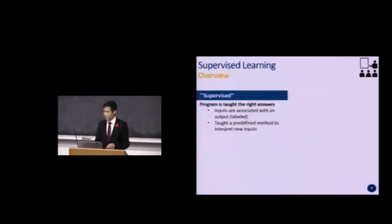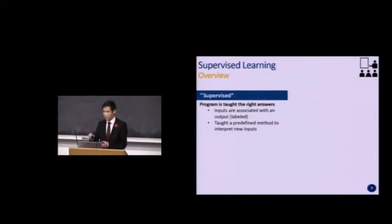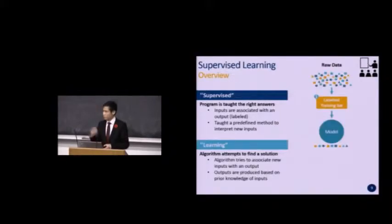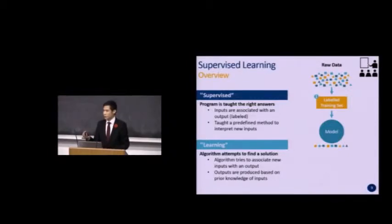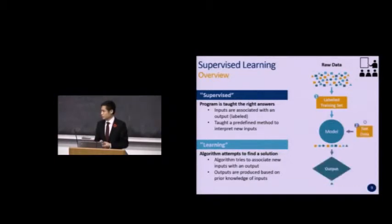In supervised learning, you are actually telling the program what the right answers are. You tell it that the data is associated with a color and shape label, creating a labeled training set to teach the program to build a model. The outputs of the model are the different colors of the shapes. Now imagine you have a new input — three lines in teal — and the model predicts the output is a teal triangle.